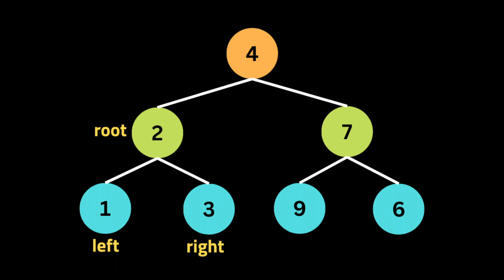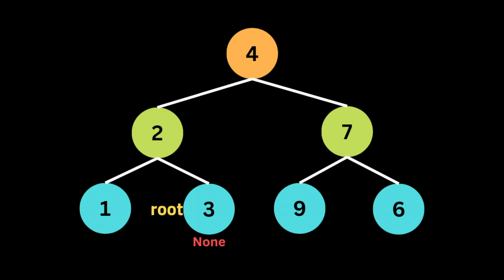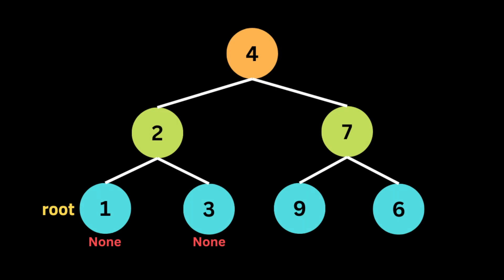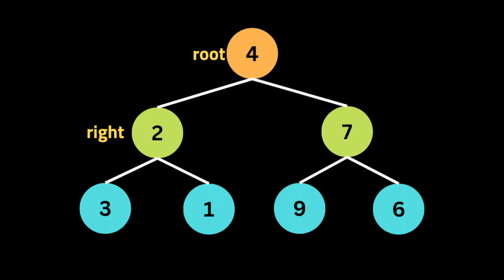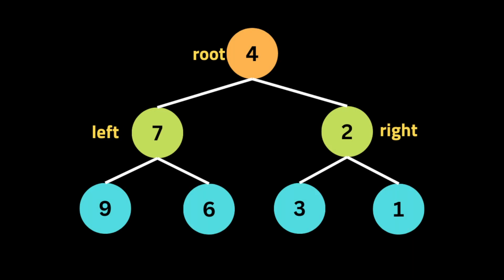The second step is to call invert tree recursively on the left child and assign the return value to the right child of the current node. So invert tree is called on node 2, we store its left and right values, then call it again on the right child — no children, return none — then on the left child — also return none. We return to root 2 and swap its left and right children (1 and 3). Finally, back at node 4 we swap the right and left children, and this is how the tree looks in the end.